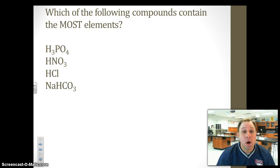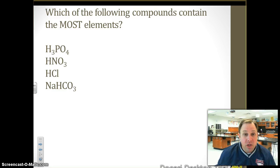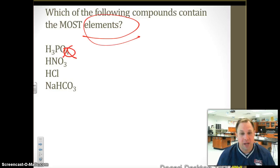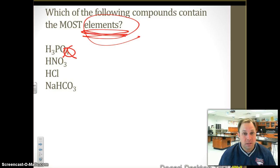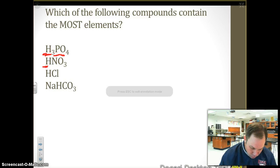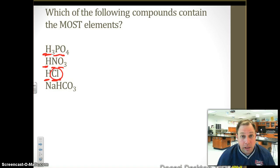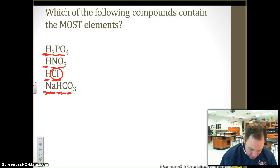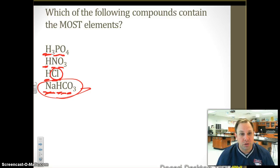Which of the following compounds contains the most elements? Got to be careful on this one — most elements, not most atoms. Ignore the subscript numbers; those are the number of atoms, not elements. Looking at our choices: one has hydrogen, phosphorus, and oxygen — three elements. Another has three elements. One has two elements, including chlorine (CL — that lowercase l goes with the capital C, that's chlorine). The last one has sodium, hydrogen, carbon, and oxygen — four elements. That last one has four elements; the others have three or two. That's your answer.